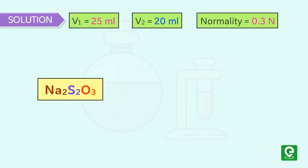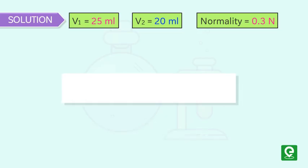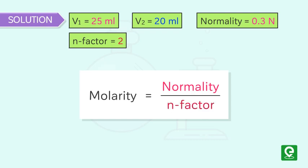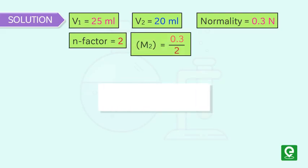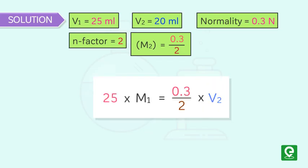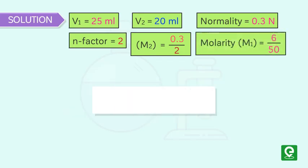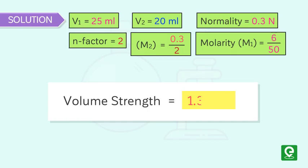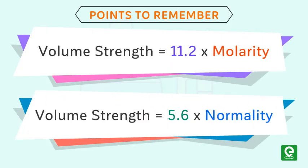Na₂S₂O₃ breaks down into two sodium ions and one thiosulfate ion, so its n-factor = 2. Therefore molarity of Na₂S₂O₃ M₂ = 0.3/2. By definition M₁V₁ = M₂V₂, so 25 × M₁ = (0.3/2) × 20, giving molarity of H₂O₂ M₁ = 6/50. Volume strength = 11.2 × M₁ = 11.2 × 6/50 = 1.344 V. This concludes our video on volume strength of H₂O₂.